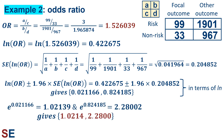Exponentiating the lower and upper bounds gives us e to the 0.021166, which is 1.02139, and e to the 0.824185, which is 2.28002. Our odds ratio 95% confidence interval of 1.0214 to 2.2800 does not include 1.0, which means the sample odds ratio is significantly larger than 1.0. Our best estimate for the population odds ratio is 1.526, and it looks like the risky trait is more common in those with the focal outcome than in those without it.